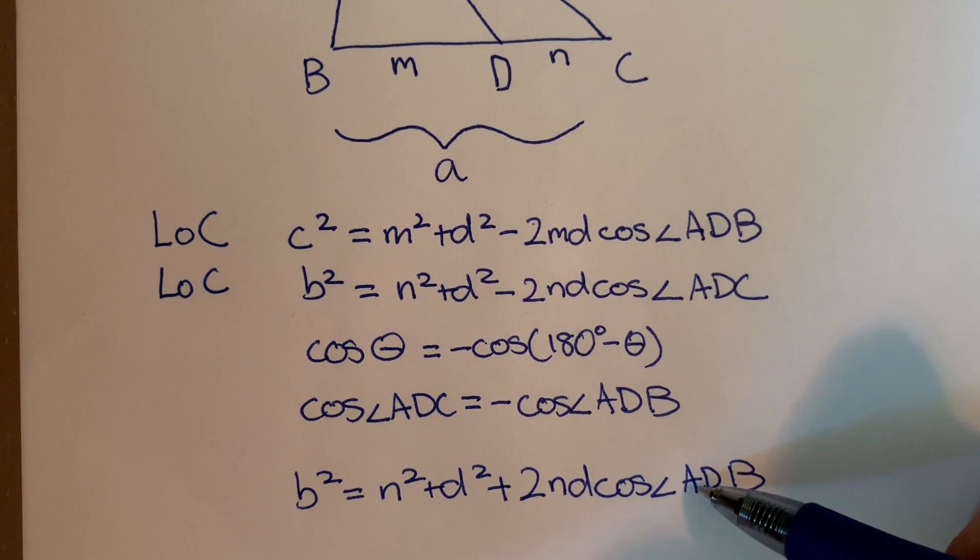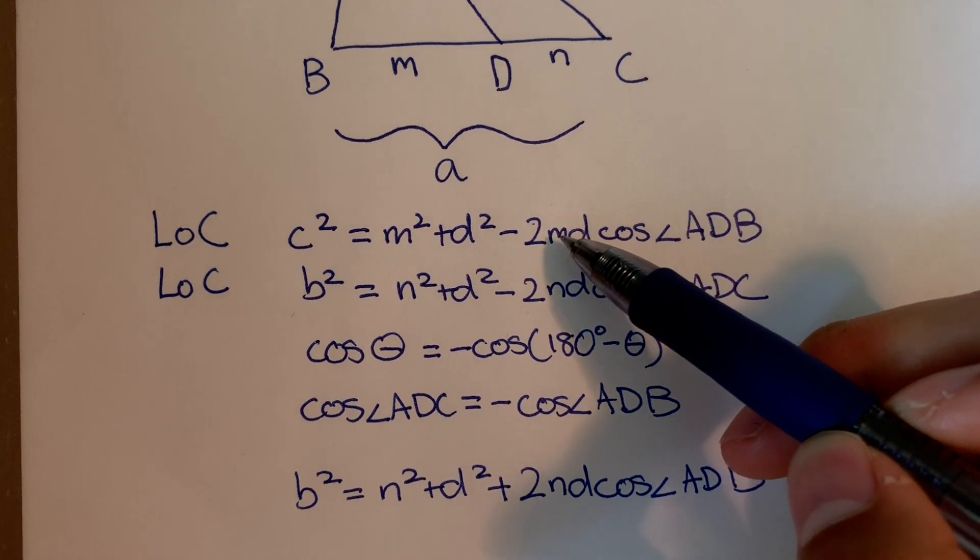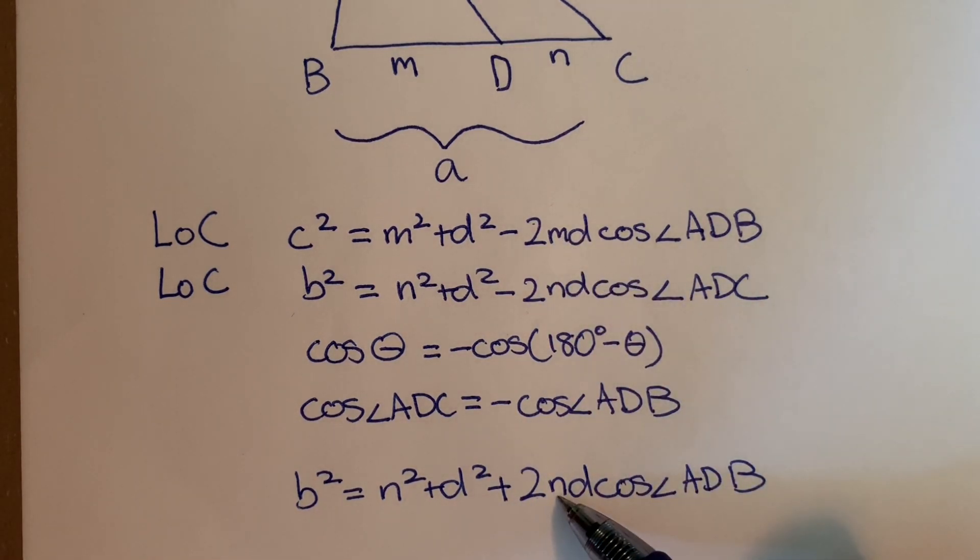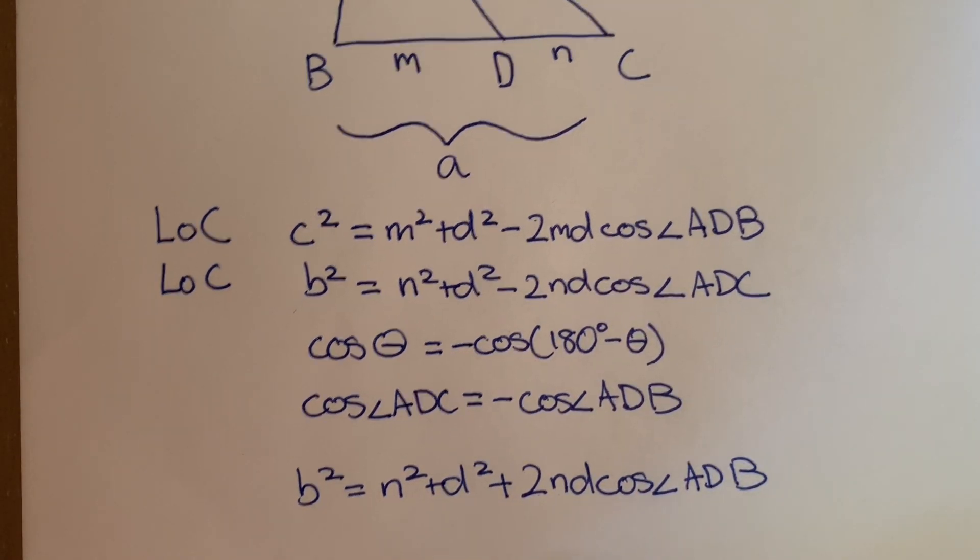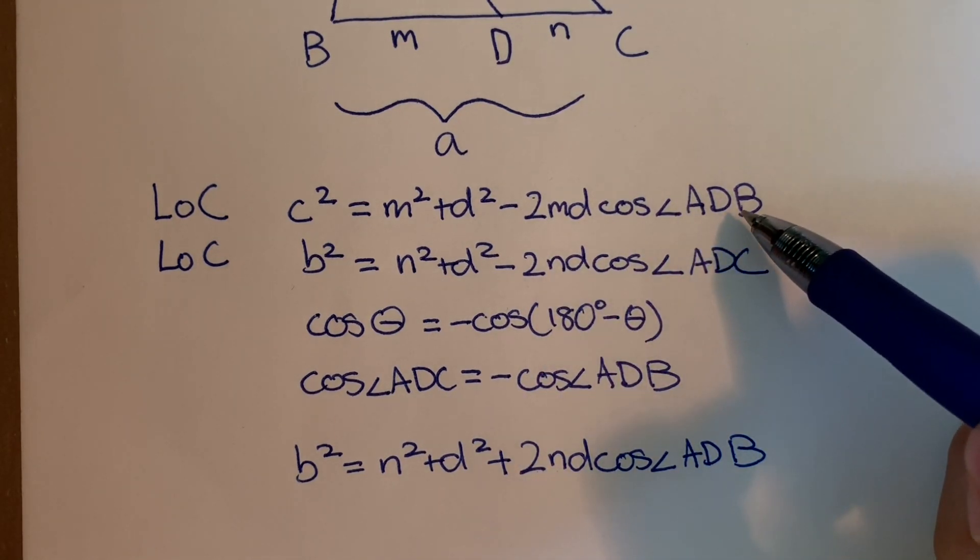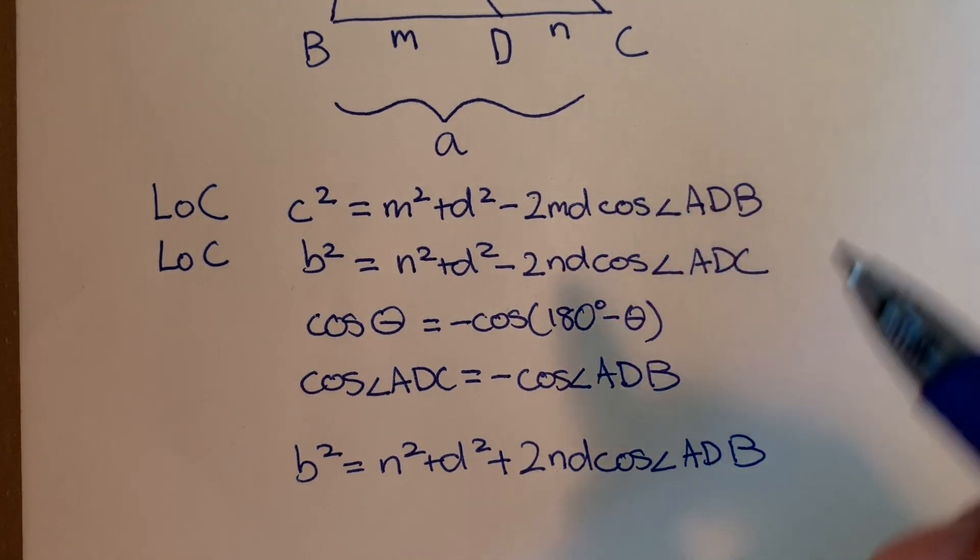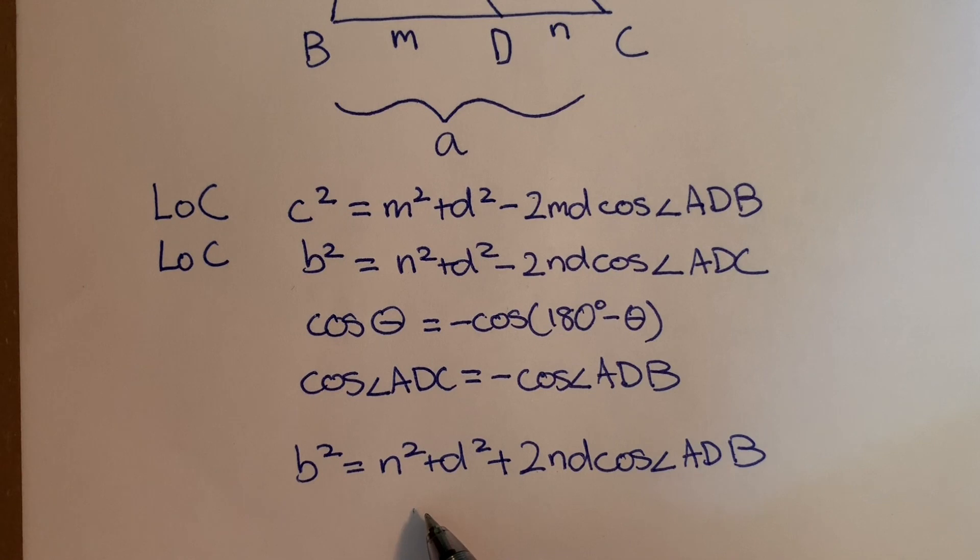Looking at our two equations, we still want to cancel out these two terms. And they're almost identical, except for we have an M here and an N here. So what we could do is multiply the top equation by N and then the bottom equation by M. Then these two terms will be exactly identical.